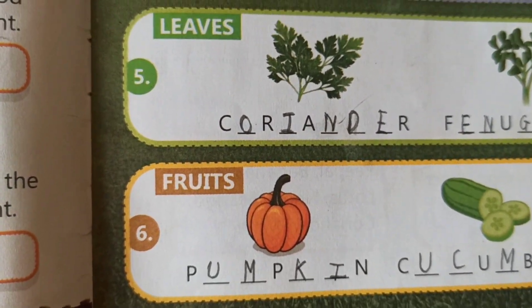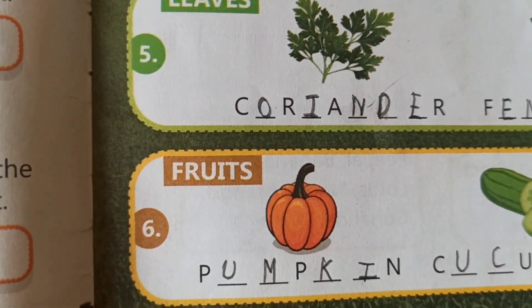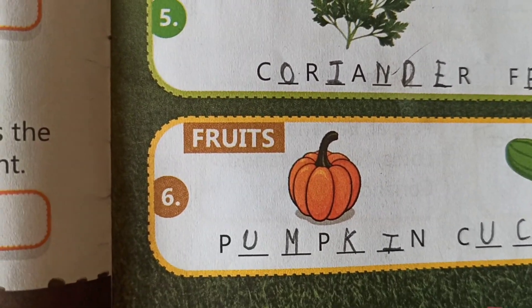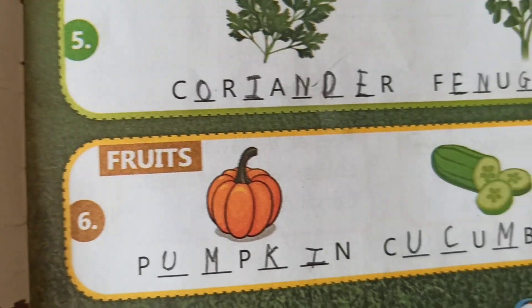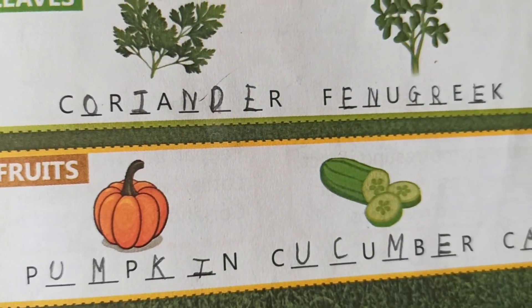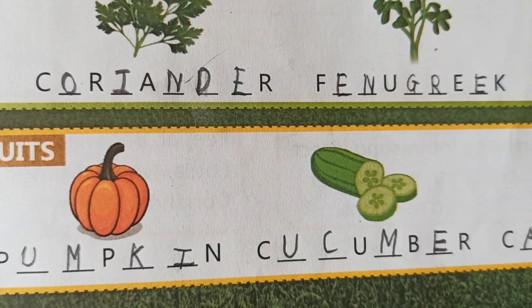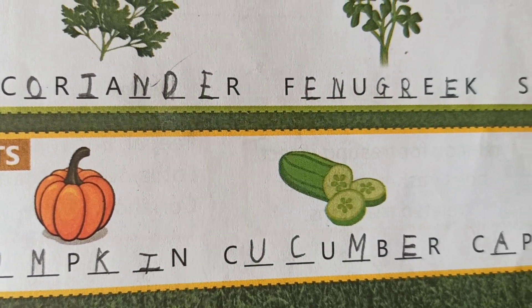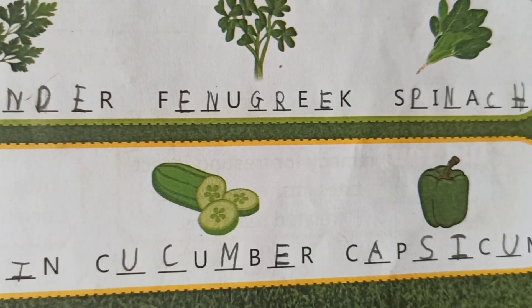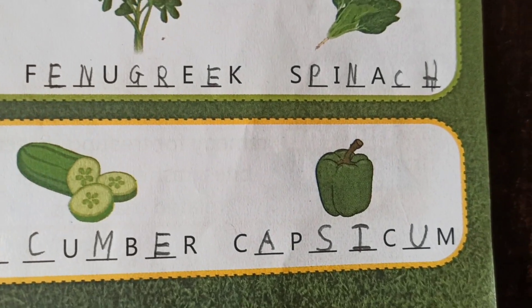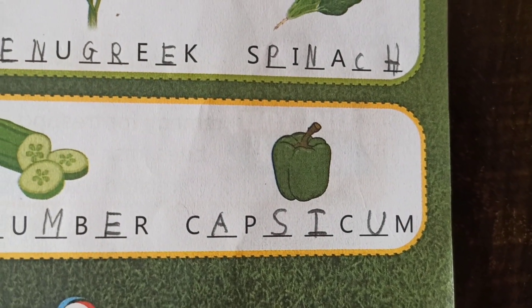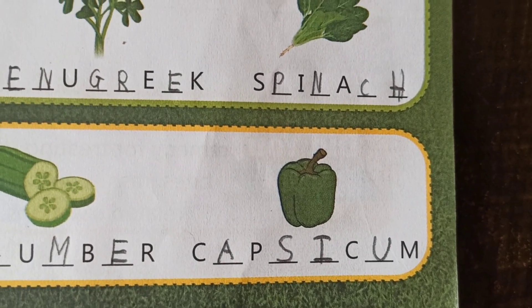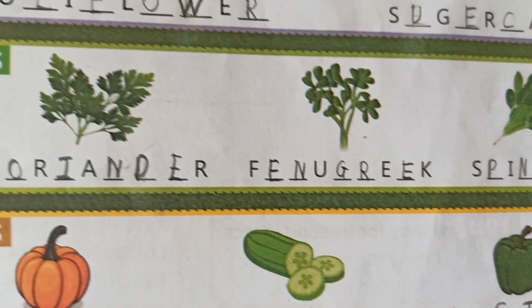Fruits — vegetable fruits. Pumpkin: P-U-M-P-K-I-N. Pumpkin. Cucumber: C-U-C-U-M-B-E-R. Cucumber. Capsicum: C-A-P-S-I-C-U-M. Capsicum.